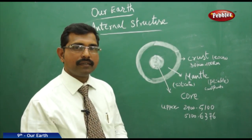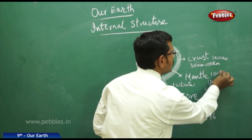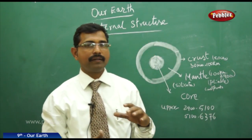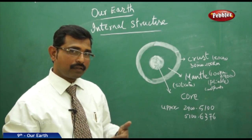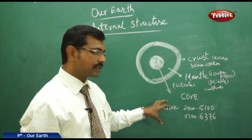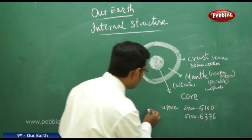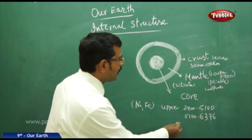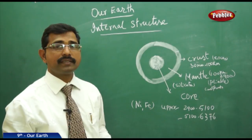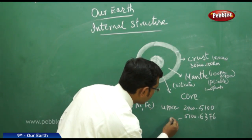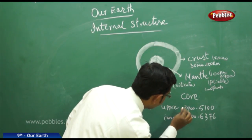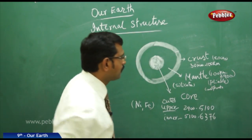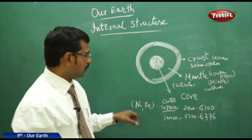The thickness of the mantle is around 100 km to 2900 km. Once you go deeper to 2900 km, you will get the upper layer of the core, also called the outer core. It is composed of nickel and iron material in the molten condition. From 5100 to 6376 km, you will find the inner core.